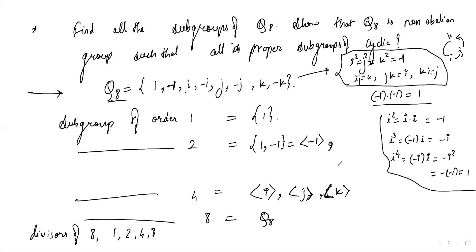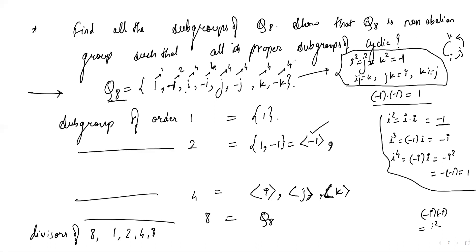The order of i is 4, so the order of i² is 2, but i² = -1. Checking other elements: -i also has order 4 since (-i)² = i² = -1. So there is only one element of order 2, namely -1, which means there is only one subgroup of order 2.